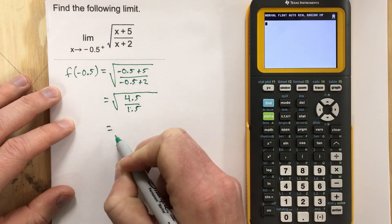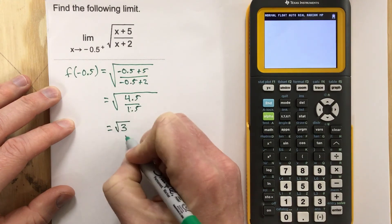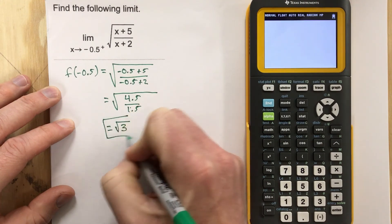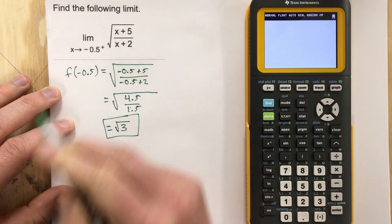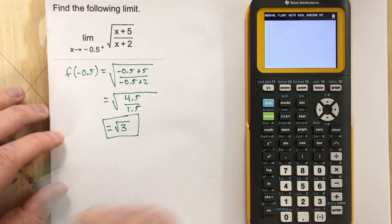Well, 4.5 divided by 1.5 is root 3. So the limit as x approaches negative 0.5 from the right side is root 3.